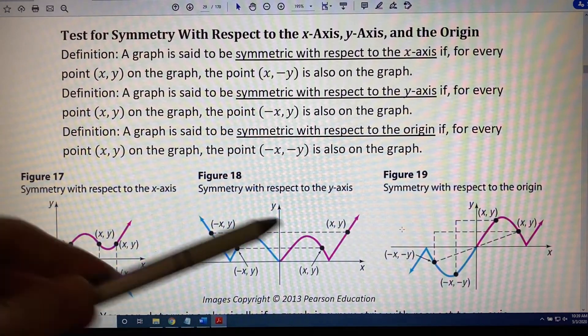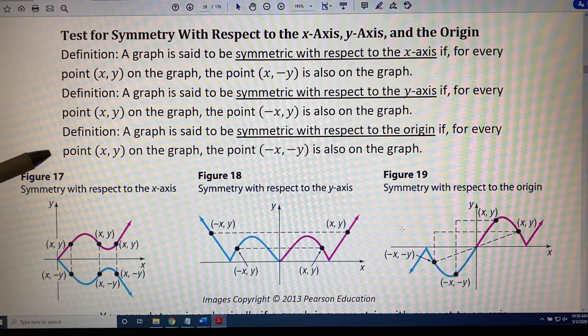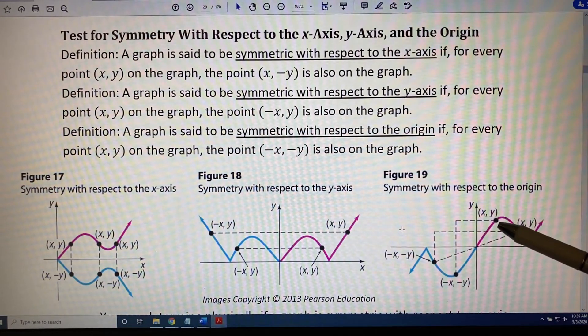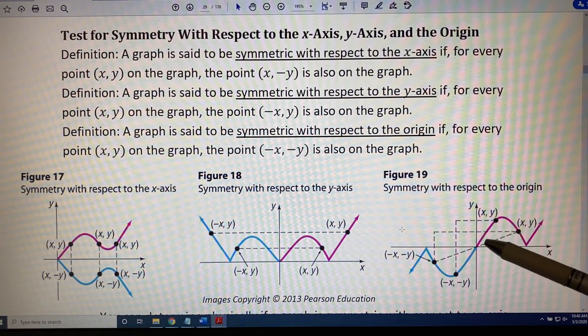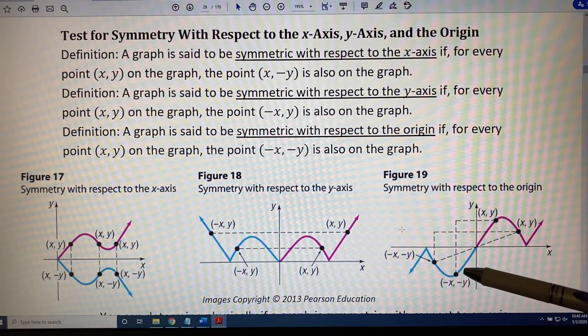The third definition goes with figure 19. A graph is said to be symmetric with respect to the origin if, for every point x, y on the graph, the point negative x, negative y is also on the graph.